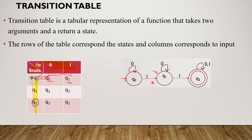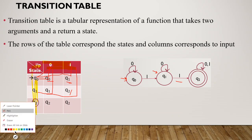For state Q1: del(Q1, 0) gives Q1, and del(Q1, 1) gives Q2. For state Q2: del(Q2, 0) gives Q2, and del(Q2, 1) gives Q2. This completes the data filling of the transition table.